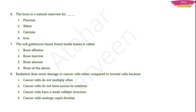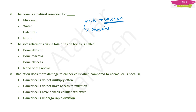The sixth question: the bone is a natural reservoir for — options are fluorine, water, calcium, and iron. Our mothers used to say to drink lots of milk because milk is rich in calcium, which makes our bones stronger. Our bones are majorly composed of calcium, so the more calcium there is, the stronger the bones. Therefore, bones are the natural reservoir for calcium.